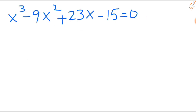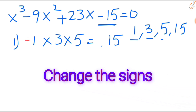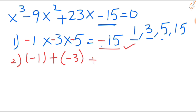Here the question is x cubed minus 9x squared plus 23x minus 15 equal to 0. First find the factors of 15: 1, 3, 5, 15. Take 1, 3, 5. Multiply these three: 1 times 3 times 5 gives plus 15, but here you have minus 15. So just change the signs to minus 1, minus 3, minus 5. Minus times minus is plus, plus times minus is minus. So now the first condition is satisfied. Now condition 2: when you add these three numbers, minus 1 minus 3 minus 5 gives minus 9, which should equal your x squared coefficient. So this condition also satisfies.